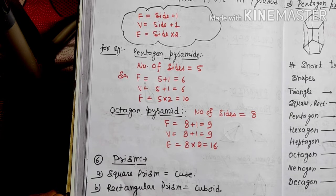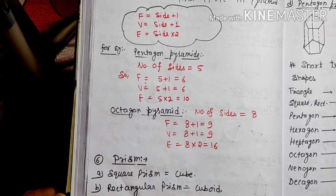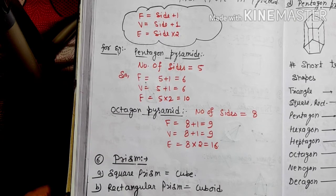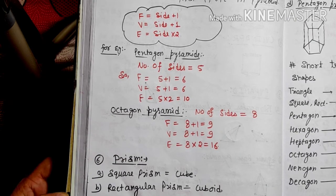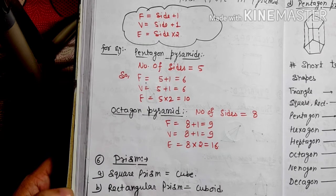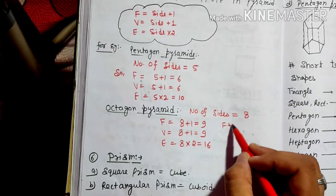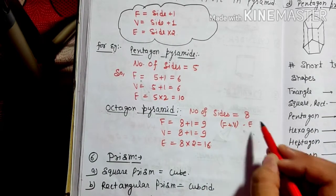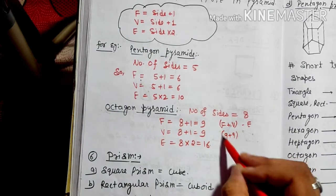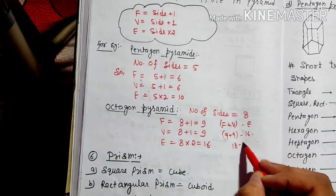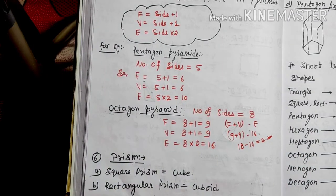You can verify Euler's formula for both examples. For the octagon pyramid: F plus V minus E equals 9 plus 9 minus 16, that is 18 minus 16, that is 2 — hence verified.